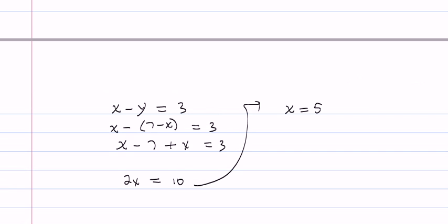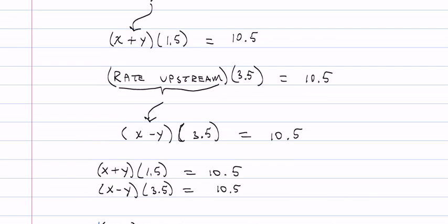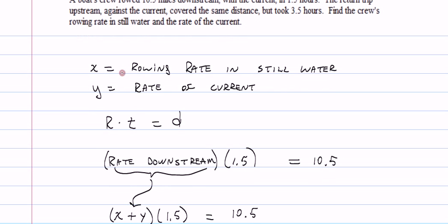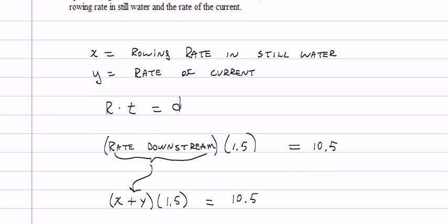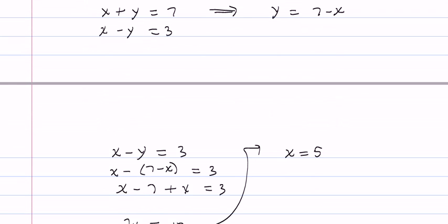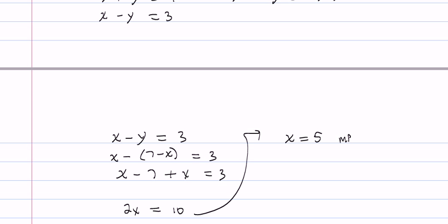Well, what was x anyway? x, remember, was the rowing rate in still water. So this is x miles per hour in still water.